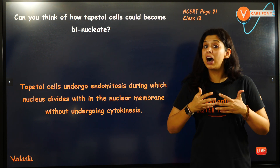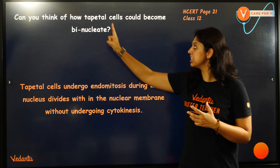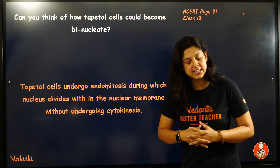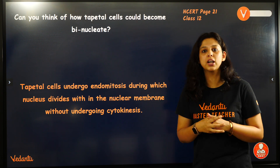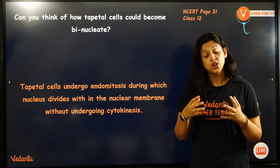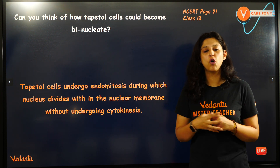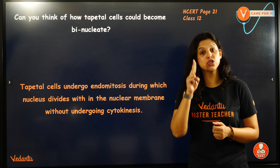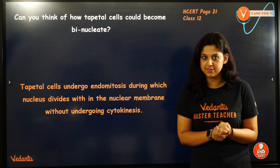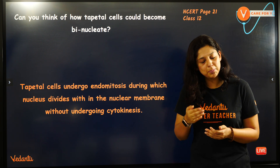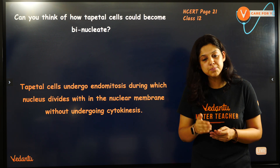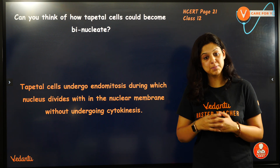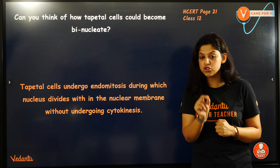Can you think of how pebcq ban sakta hai? Do the tapetal cells nourish karte hai? You know, spore formation wale cells — how they become binucleate or two-nucleus wale. Not only binucleate, but through this process multi-nucleated cells bhi bante hai.